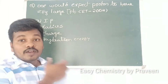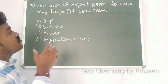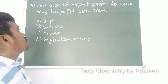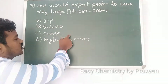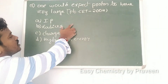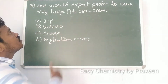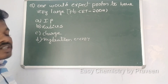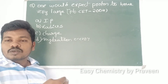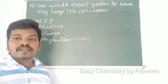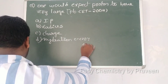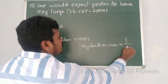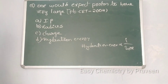One would expect the proton to have a very large — ionization potential, radius, charge, or hydration energy? The proton will not show very large ionization potential, radius, or charge, but it does have the highest hydration energy. Hydration energy is inversely proportional to size — since the proton has a very small size, it has the highest hydration energy.